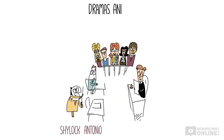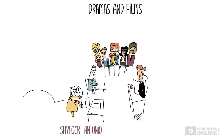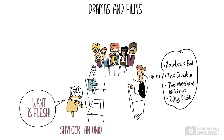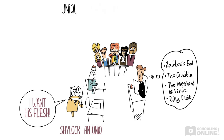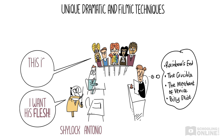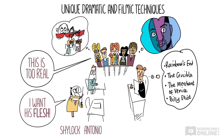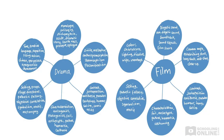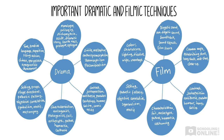Similarly, dramas and films also create whole worlds and vivid characters that the audience can imagine and be immersed in. If you're studying Rainbow's End, The Crucible, The Merchant of Venice or Billy Elliot, you need to understand the unique techniques that dramas and films use to bring their imagined worlds to life. A short film or play about human experiences would also make a great related text. Feel free to watch our Stage 6 English Essentials series, Destroying Drama, to brush up on these techniques.